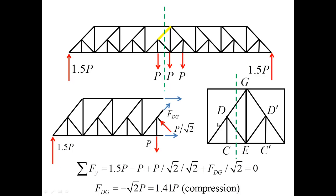And this cut as you can see here goes through four bars. And one of them of course is the bar of interest DG. And the crucial part of this cut is that the force in the bar DE has been already determined and it is compression P over square root of 2. And so the forces in blue which are unknowns I show as tensile but the force P over square root of 2 I show as compression.